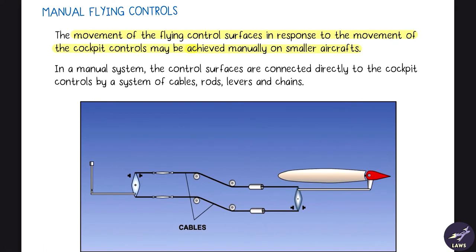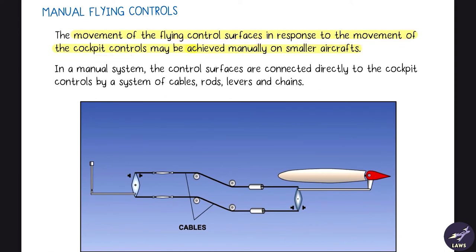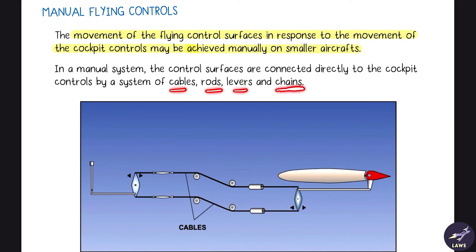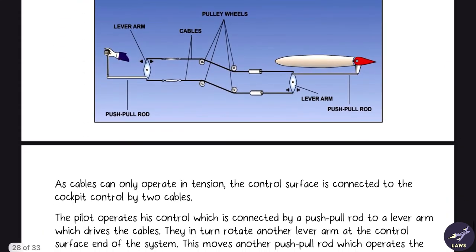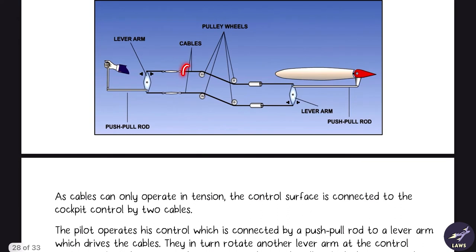Next is manual flying controls. On smaller aircraft, movement of flying control surfaces in response to cockpit inputs is achieved manually with a system of cables, rods, levers, and chains. Most manual control systems, like those in a Cessna 172, use flexible wire cables. Components include cables, pulley wheels, fair leads, and turnbuckles.